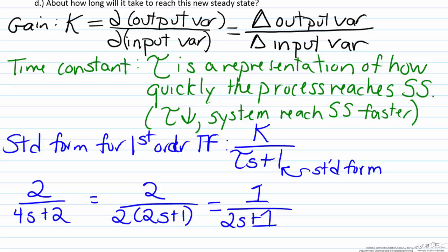And now that we are in standard form, we can clearly see the fact that the value of our gain, our steady state gain, is 1, and the value of our time constant, tau, is 2.